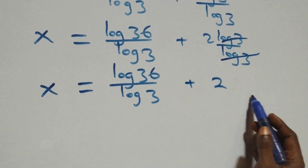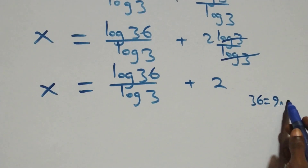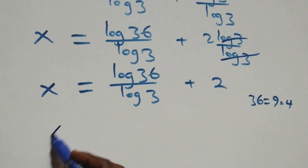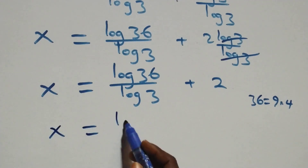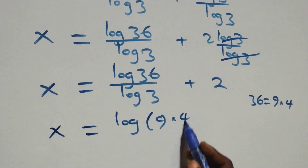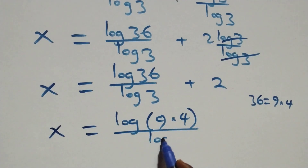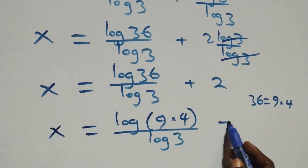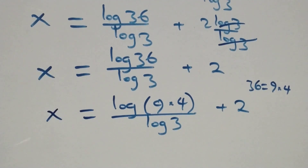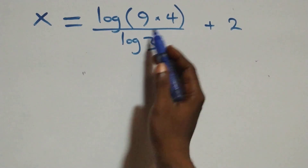Our next step: we can also express 36 as 9 times 4. So here we have x equals log of 9 times 4 over log 3, plus 2. This also follows from the law of logarithms.